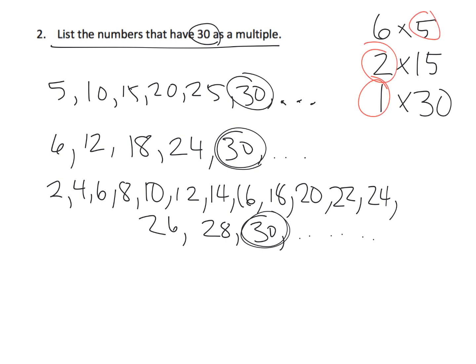So all six of these numbers, 1, 2, 5, 6, 15, and 30, these six numbers are the six numbers that have 30 as a multiple.